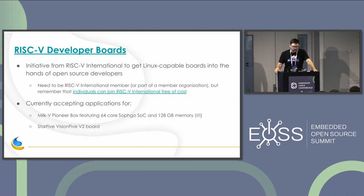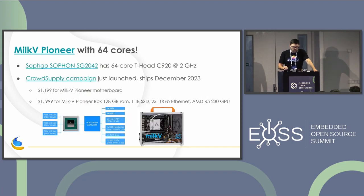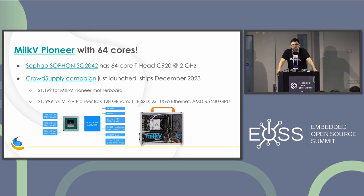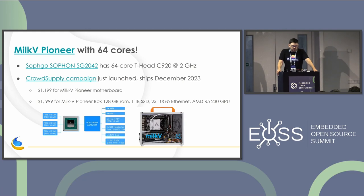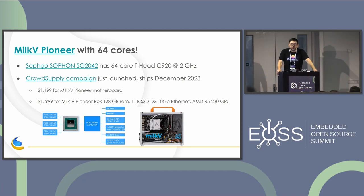I'm very excited about the 64-core board. Traditionally with RISC-V, we didn't have any high performance compute — nothing you could do native builds on. Everyone's either cross-compiling or compiling natively in QEMU on an x86 machine. This board will finally make it possible to start doing native builds, which for example Fedora needs to do for RISC-V to become an official architecture.